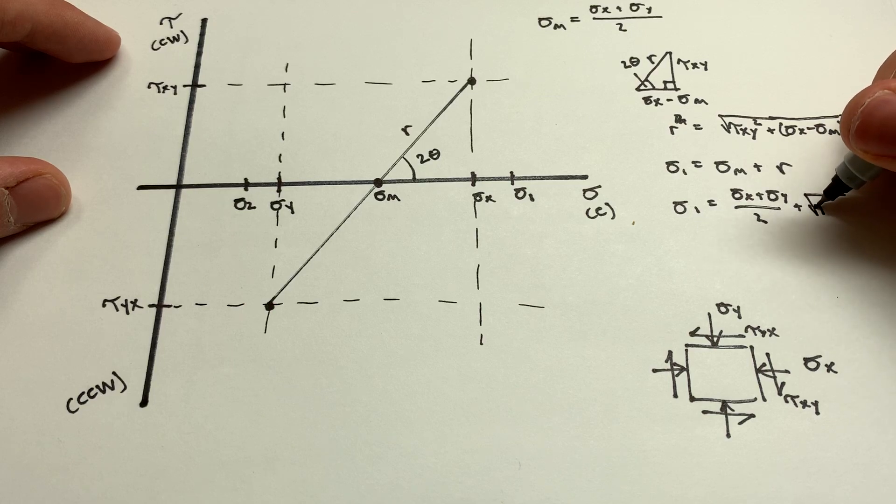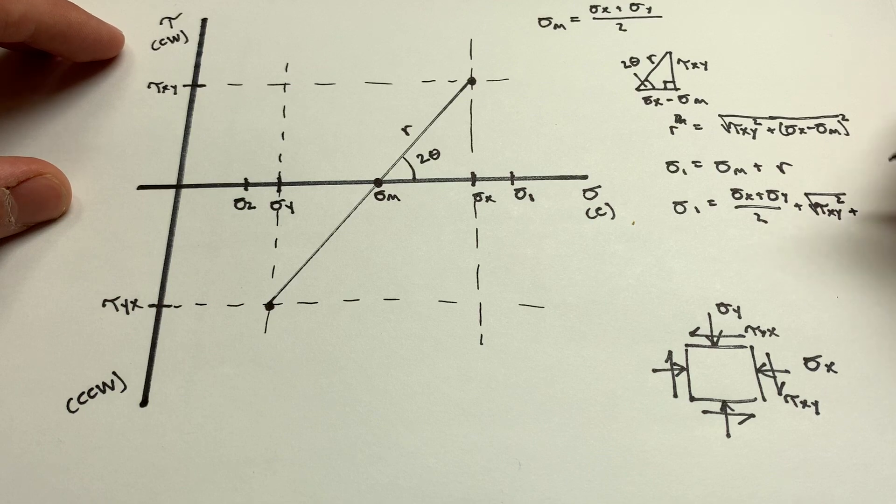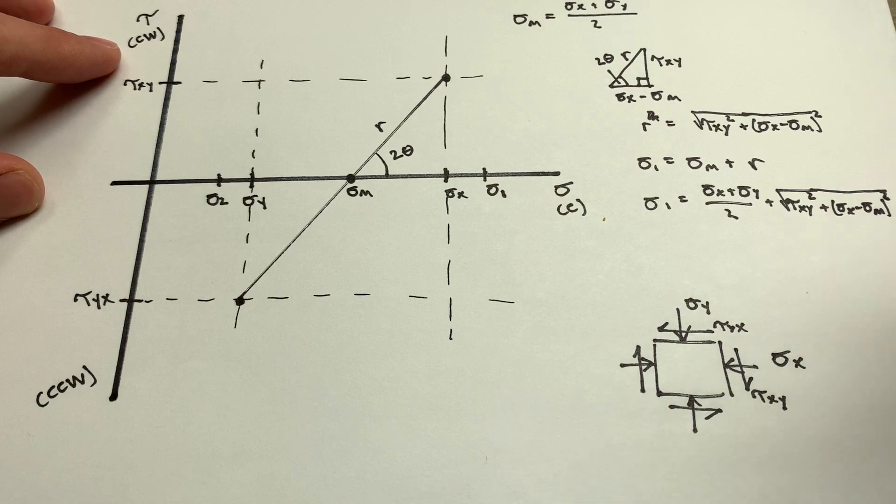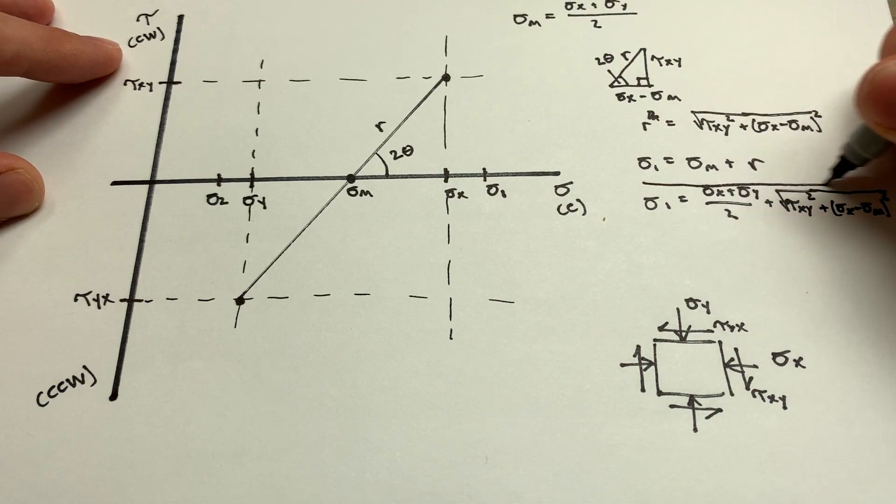sigma x plus sigma y over 2 plus our r value, which is the square root of tau xy squared. Might run out of space here. I'll try. Sigma x minus sigma m squared. There we go. So that's going to be our value for sigma 1.